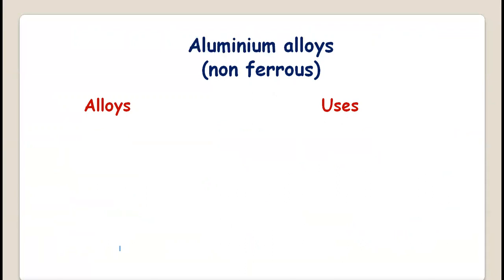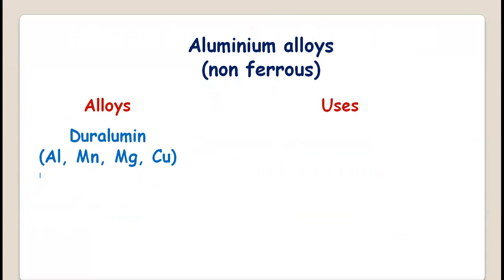Now, alloys of aluminium — again, non-ferrous alloys. Duralumin is an alloy of aluminium, which forms the major part as the solvent, along with manganese, magnesium, and copper. One of the main uses of duralumin is in aircraft bodies. Pure aluminium is soft, so it is not ideal for making aircraft bodies.